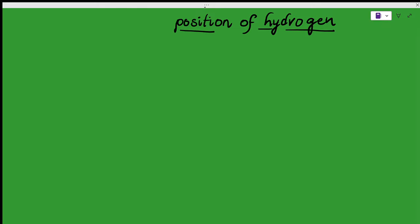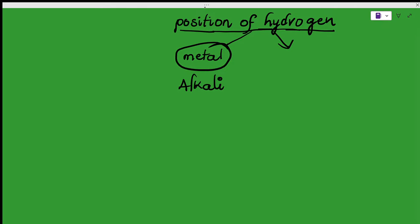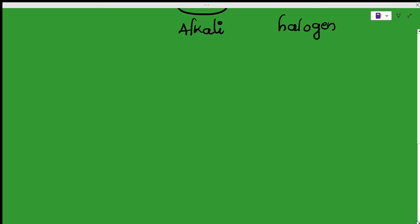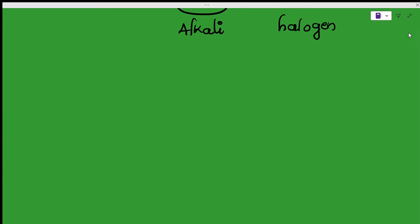Coming to the topic: the position of hydrogen. Generally, you can see hydrogen occupies two positions — one is in the alkali metals group, and the other is in the non-metals, specifically the halogens group. Hydrogen is the only element that occupies both positions — in the alkali metals and at the same time in the non-metals. That is why hydrogen does not have a fixed position.